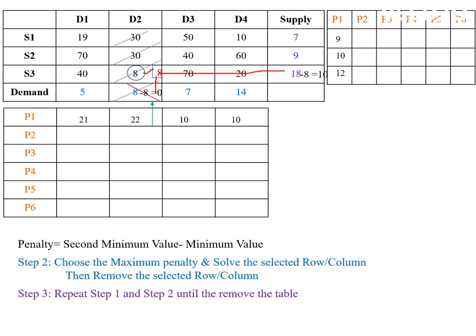Next, find penalty 2. For S1 row, penalty is 19 minus 10, that is 9. For S2 row, it is 60 minus 40, that is 20. For S3 row, it is 40 minus 20, that is 20. Similarly, for D1 column, penalty is 40 minus 19, that is 21.